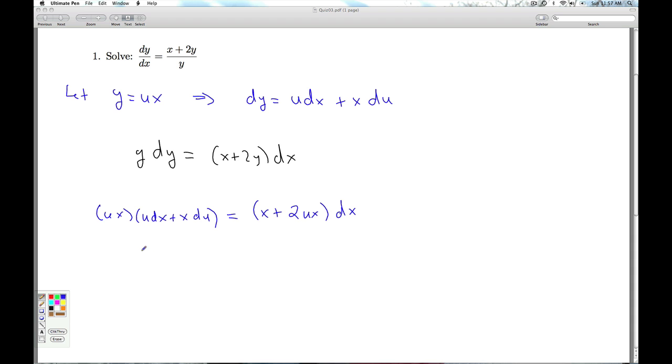I multiply things out here on the left-hand side. I get u²x dx plus ux² du. And this is equal to x plus 2ux dx. Now the claim is, this is a separable equation.